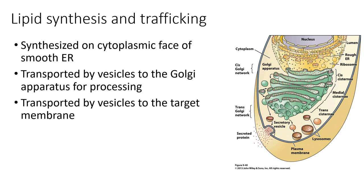That was about protein synthesis and trafficking of secreted and membrane proteins. Now it's important to consider lipid synthesis and trafficking, since this chapter is all about lipids. Lipids are also synthesized in the ER, but while the rough ER is for proteins, lipids are synthesized in the smooth ER on the cytoplasmic face. From there, there's a similar trafficking pattern: lipids are transported in vesicles to the Golgi, where they're further processed, travel through the different Golgi compartments, and eventually get sent to the target membrane — whether the cell membrane or the membrane of another organelle.